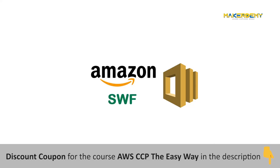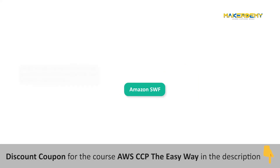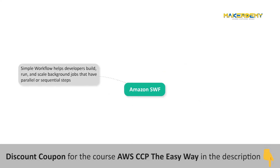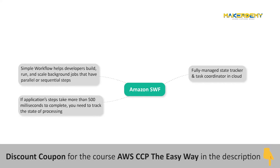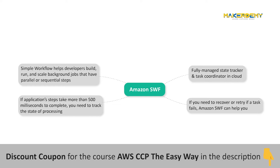Amazon Simple Workflow, or Amazon SWF, helps developers build, run, and scale background jobs that have parallel or sequential steps. You can think of Amazon SWF as a fully managed state tracker and task coordinator in the cloud. If your application steps take more than 500 milliseconds to complete, you need to track the state of processing. If you need to recover or retry if a task fails, Amazon SWF can help you.